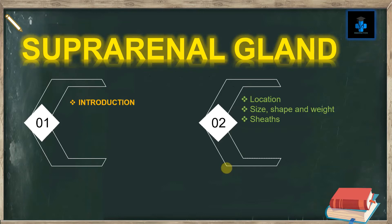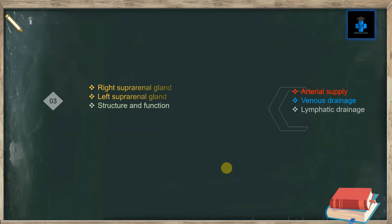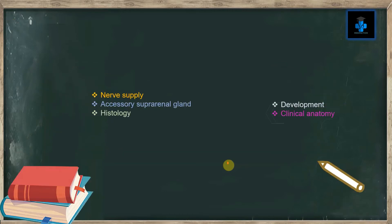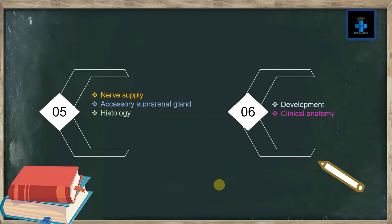In this video I will be enumerating an introduction about the adrenal gland. We will also be learning about the location, size, shape, weight, and about sheets. Then we will learn about the right suprarenal gland, left suprarenal gland, structure and functions. We will also be learning about the arterial supply, venous drainage, lymphatics, nerve supply, accessory suprarenal gland, histology, development, and some important clinical anatomy.